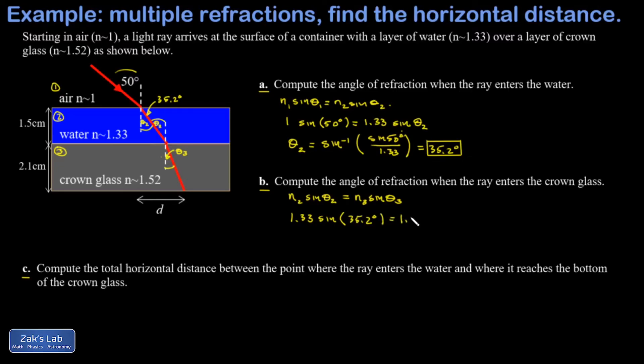Sine theta 3 is the only unknown here, so we divide by 1.52 and invert the sine function. When I run the numbers on this, I get 30.3 degrees.